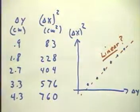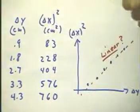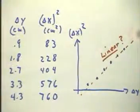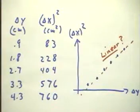Now, why should delta x squared be linearly related to delta y? Or maybe even delta x squared might be proportional to delta y.